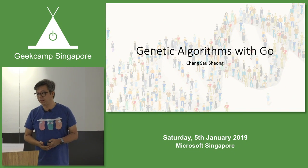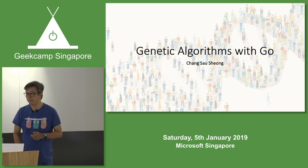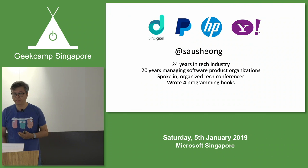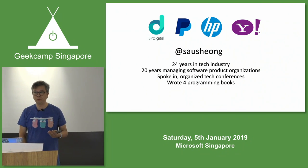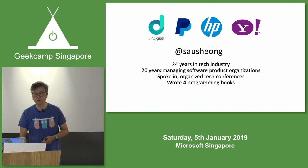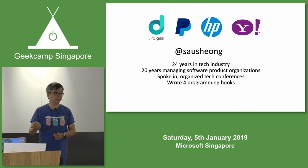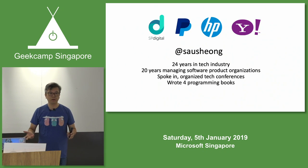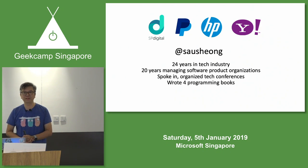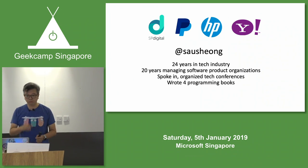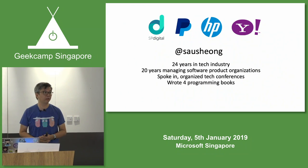What I want to talk about today is genetic algorithms with Go. A little bit about myself — I work with SP Group today in a team called SP Digital. Previously I was in PayPal, HP, and Yahoo, and a number of other companies. If you want to follow me on Twitter, this is my handle. I'm known as Sao Xiong everywhere — if you do a search for Sao Xiong, you find me anywhere. 24 years in the tech industry.